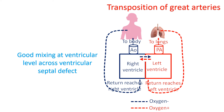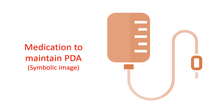When there is good mixing, part of the mixed blood goes to the lungs for oxygenation and life is possible. Sometimes a baby may be born with a very small communication between the upper chambers. This defect will not provide sufficient mixing and the baby will be blue due to poor oxygen content of the blood.